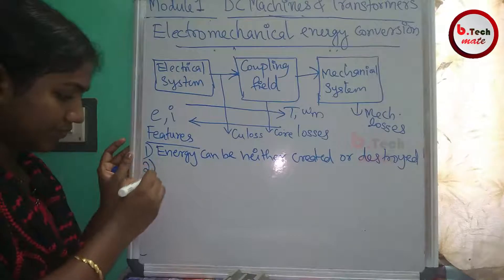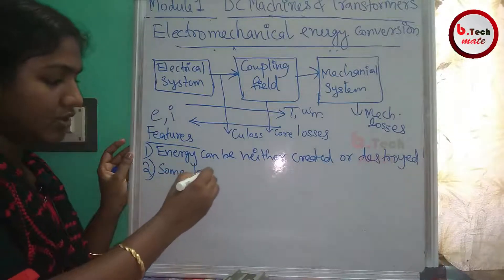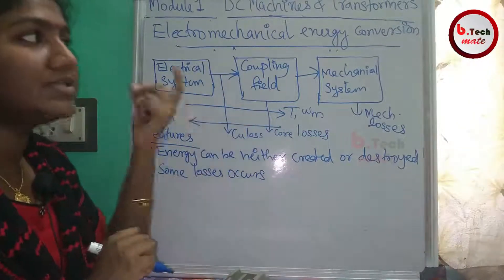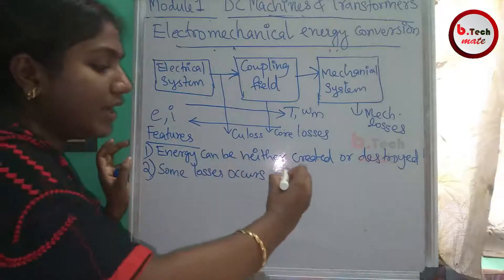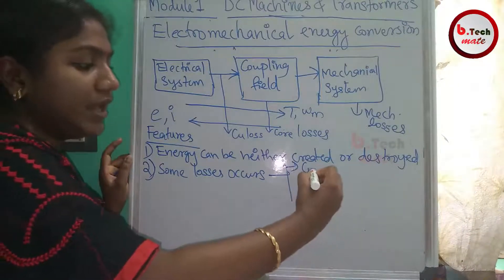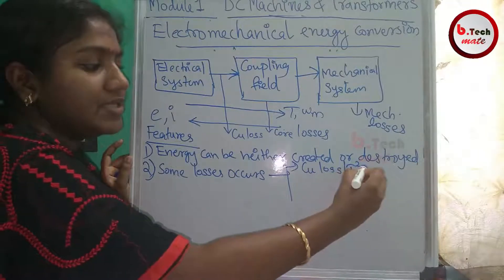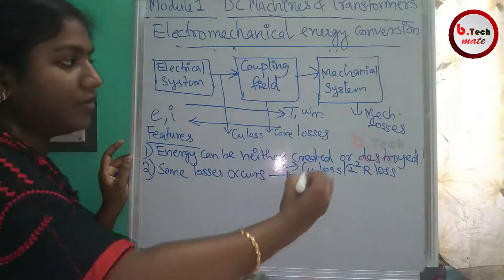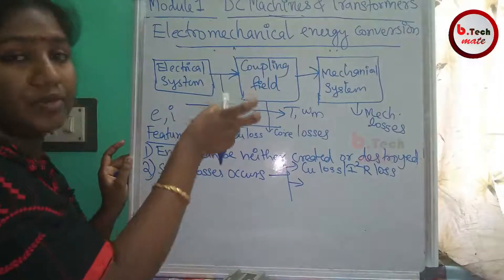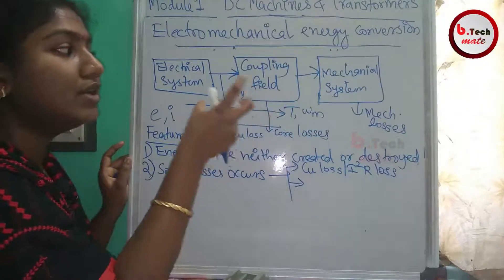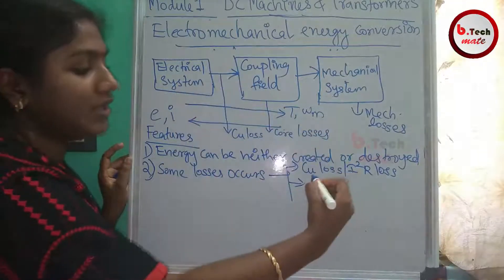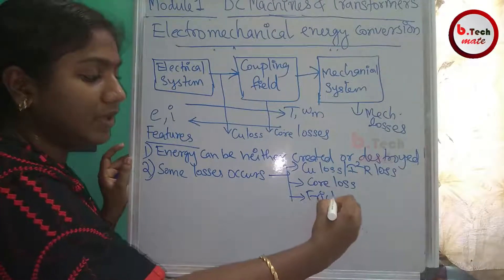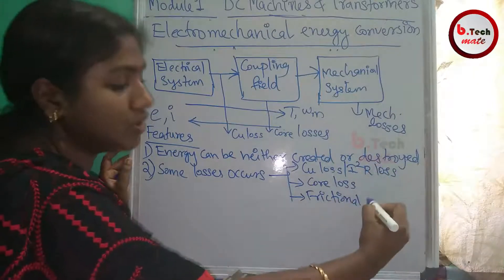The second feature is that some losses occur. During Electrical Energy Conversion, we have a couple of losses. The electrical losses include Copper Losses and I²R losses. In the coupling field, we have Core Losses. In the mechanical system, we have Frictional and Windage Losses.